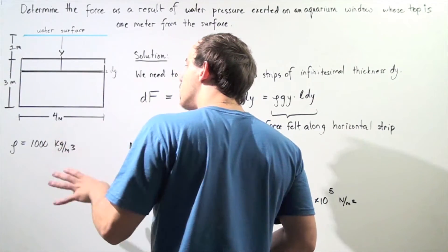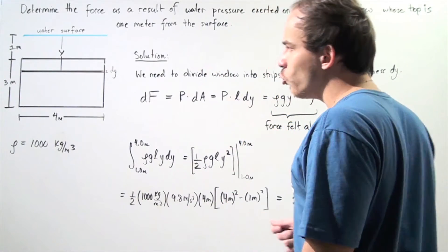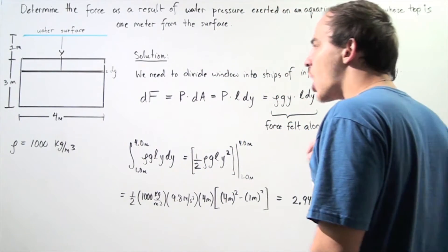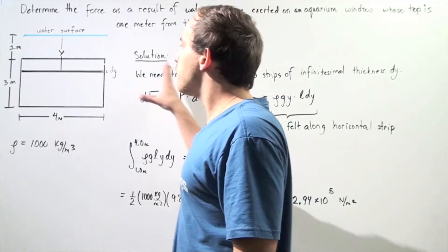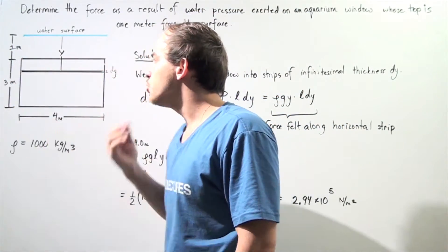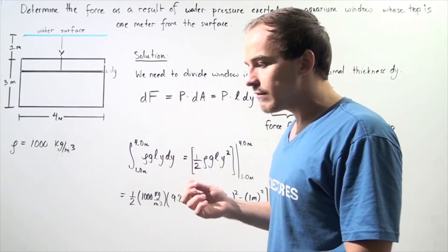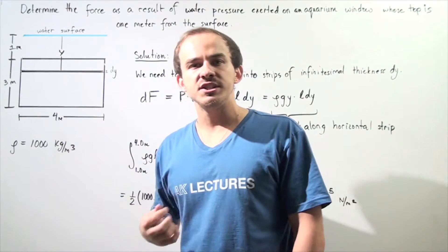Now assuming the density of the fluid is 1,000 kilograms per meter cubed, how exactly are we going to find the perpendicular force felt by this area, by the window, due to the water's pressure? So one approach to solving this problem is by using calculus.